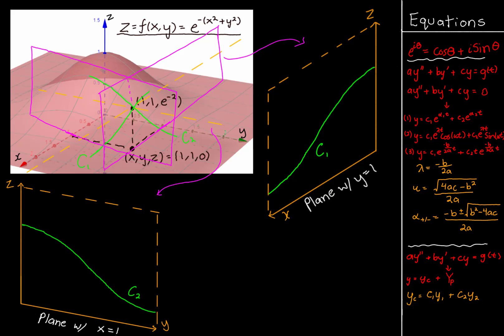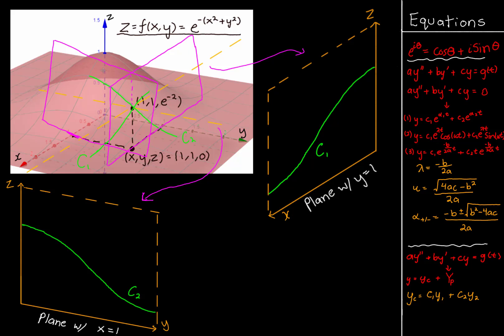I have two curves defined — C1 and C2. Curve C1 is on the xz plane where y equals 1, and you can see it mapped out on the surface itself. Curve C2 is on the yz plane where x equals 1 is kept constant, and you can see that curvature along the plane on the actual surface as well. We can then analyze the tangent lines at the same point (1, 1, e^(-2)), which is shown in pink and is the intersection of both planes.